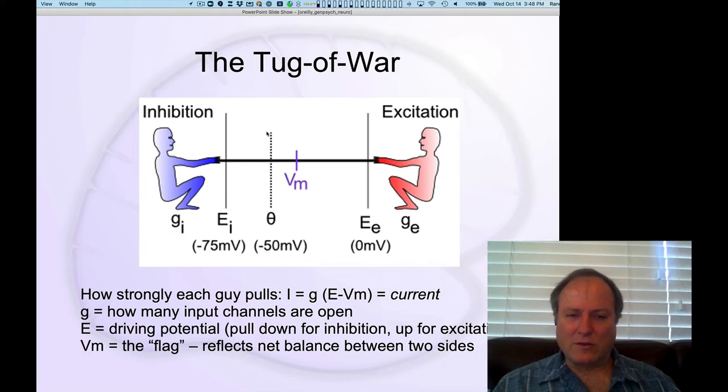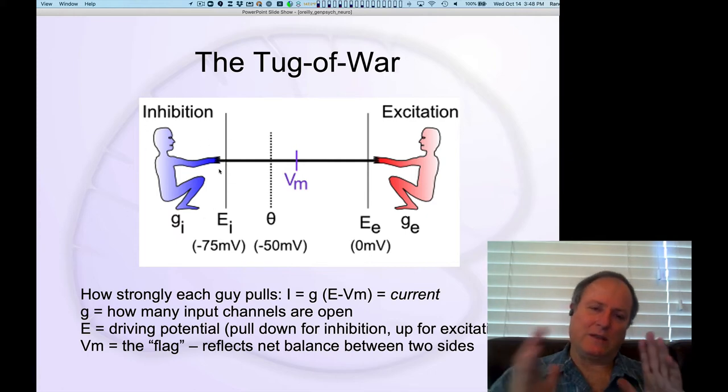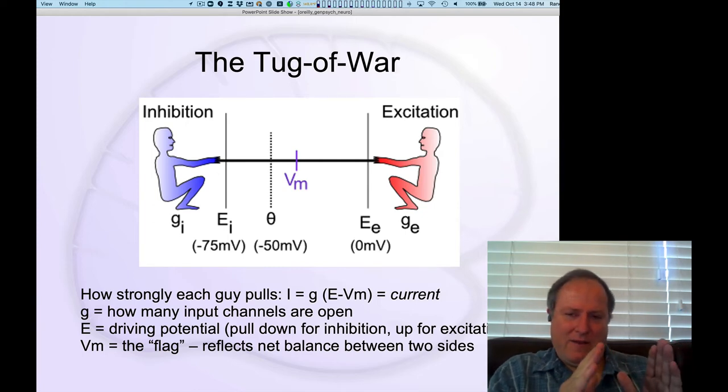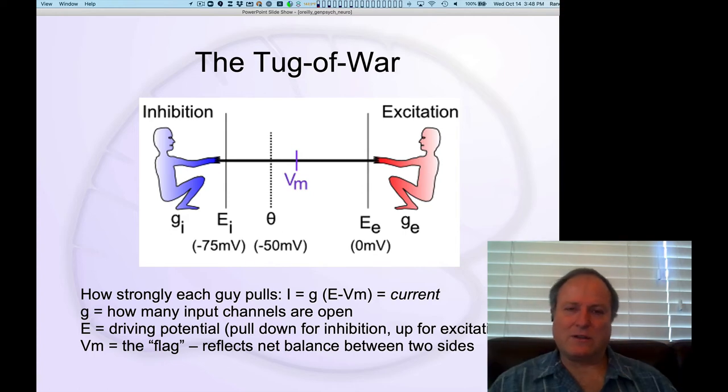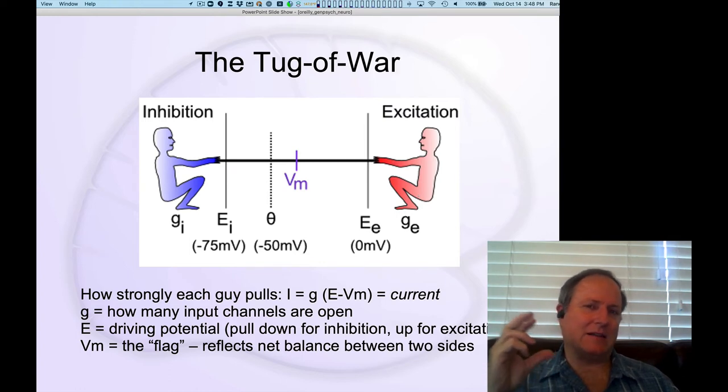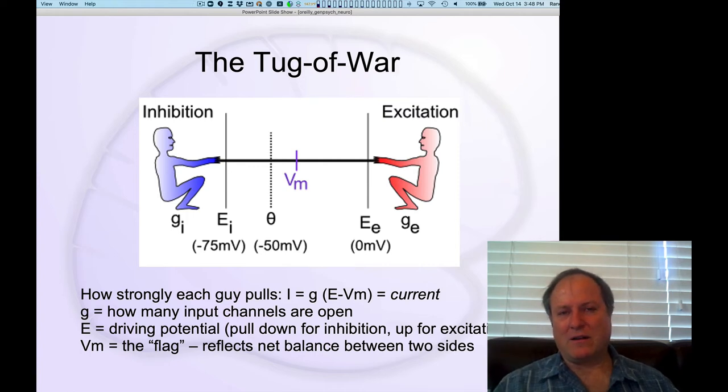And there's this critical point here, this theta, which if the membrane potential gets pulled up across that critical threshold, then the cell fires its action potential. And so that's really what's happening. Everything starts out down here at this kind of resting potential, which is at the point where inhibition is sort of pulling the system down. And then if excitation is able to yank that flag up above the threshold, in other words, there's enough of an excitatory signal coming in from those synapses, having detected some interesting pattern out there in the world. That's when the neuron starts to fire an action potential.